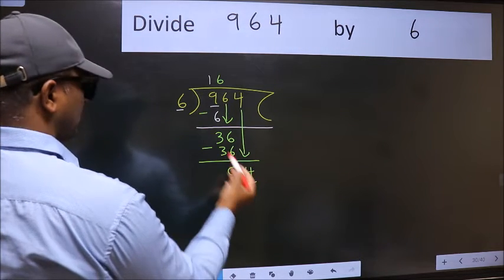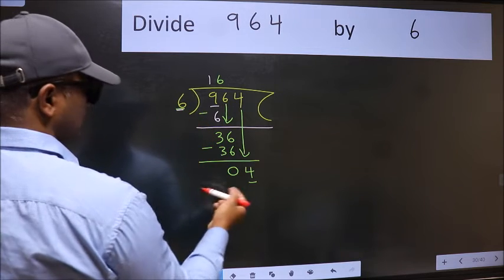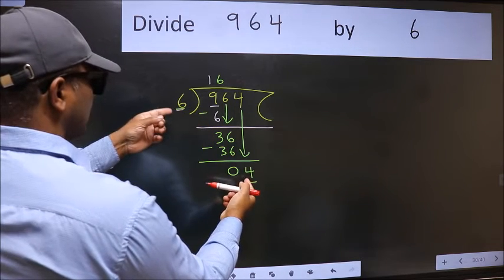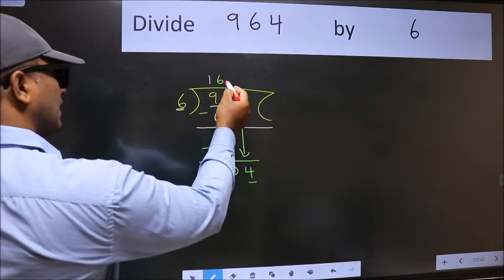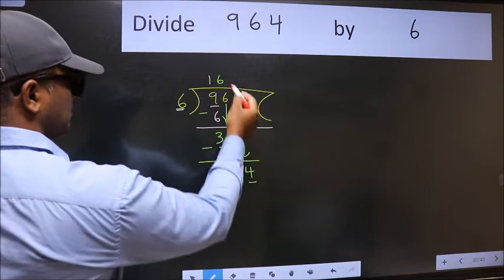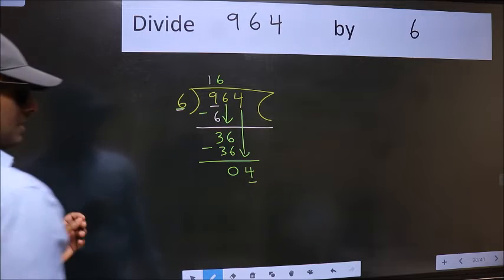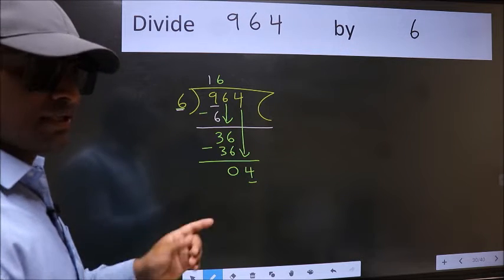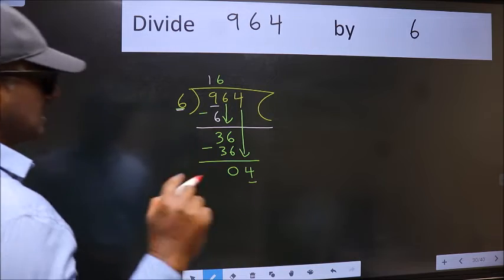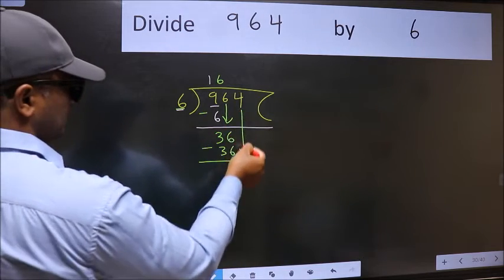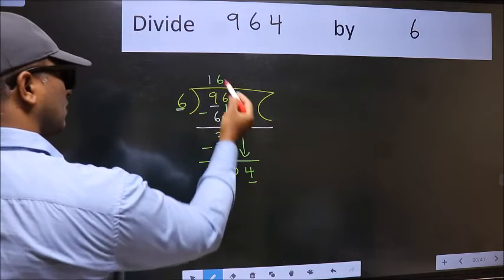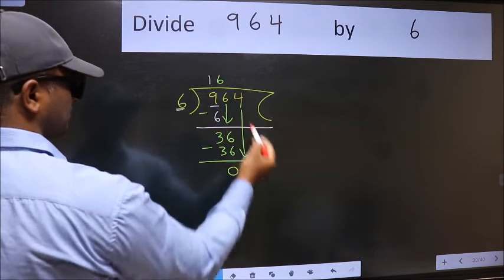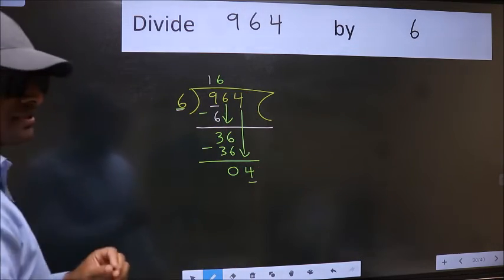Here we have 4 and here 6. 4 is smaller than 6. So, what many do is they directly put dot, take 0, which is wrong. Why is it wrong? Because just now you brought this number down, and in the same step you want to put dot, take 0.